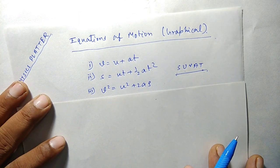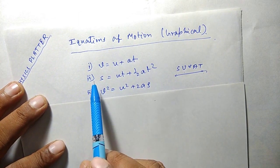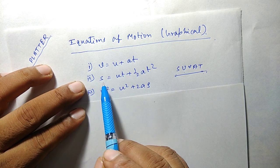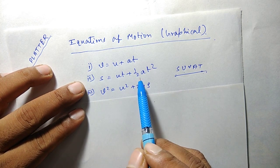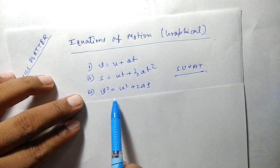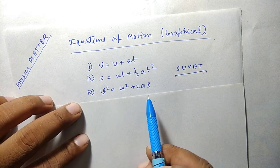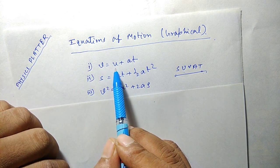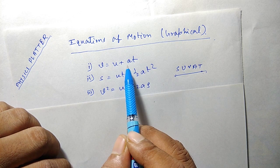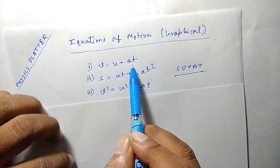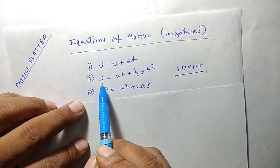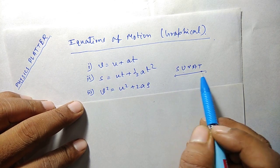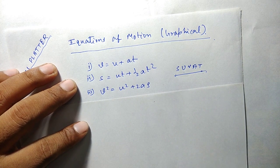We are talking about the three equations of motion when the body is moving in one dimension. These three equations are: v equals u plus at (first equation), s equals ut plus half at squared (second equation), and v squared equals u squared plus 2as (third equation). Here v is the final velocity, u is the initial velocity, a is the constant acceleration, t is the time, and s is the displacement. These equations are also sometimes known as SUVAT to make memorization simpler.